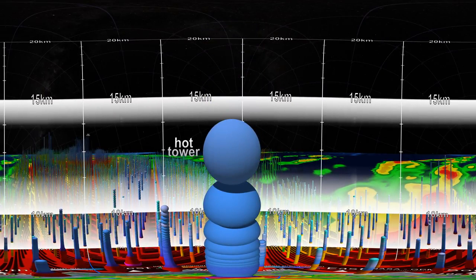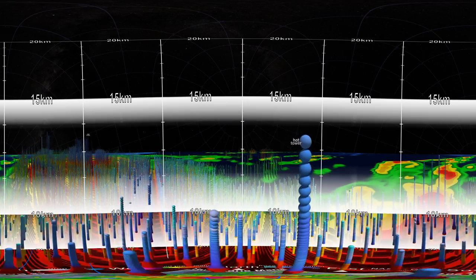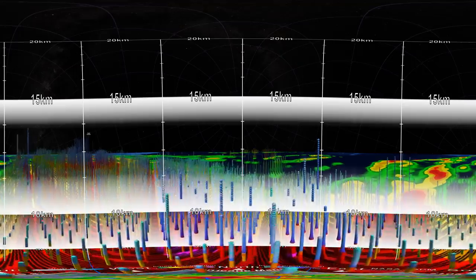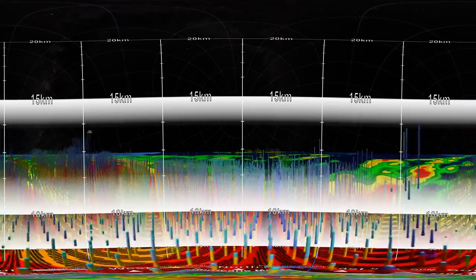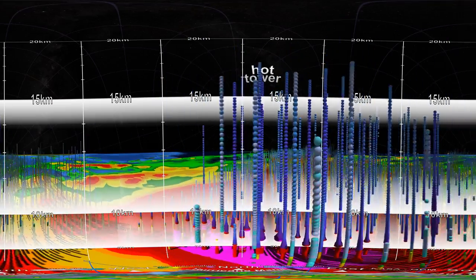Lots of heat and energy are released in hot towers as rising water vapour condenses into precipitation. Most hot towers are between 10 and 15 kilometres high, roughly the altitude that commercial jets fly. Multiple hot towers are common in intensifying hurricanes.